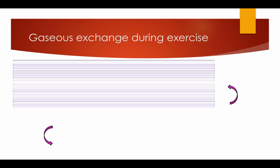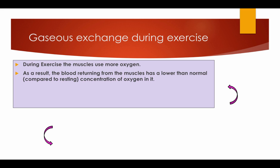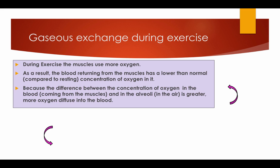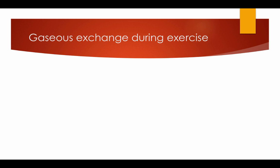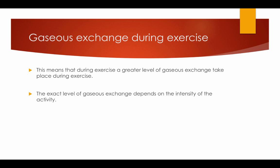Gaseous exchange during exercise. During exercise, the muscles use more oxygen. As a result, the blood returning from the muscles has a lower than normal concentration of oxygen in it. Because the difference between the concentration of oxygen in the blood and the alveoli is greater, more oxygen diffuses into the blood. At the same time, more carbon dioxide is created in the muscles during exercise. As a result of a higher concentration of carbon dioxide in the blood, and a greater difference between this and the concentration of carbon dioxide in the alveoli, more carbon dioxide is diffused back into the alveoli. This means that during exercise, a greater level of gaseous exchange takes place, and the exact level depends on the intensity of the activity.